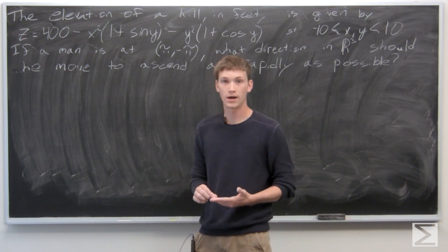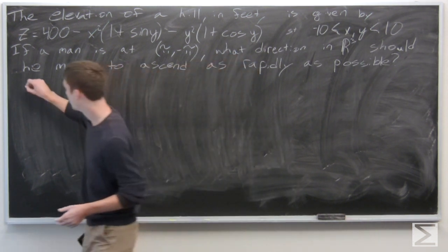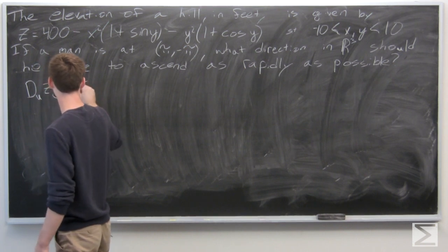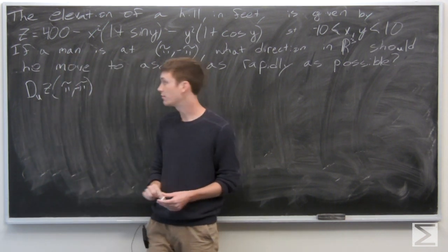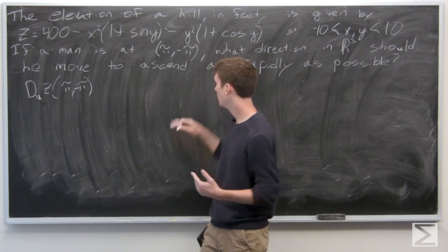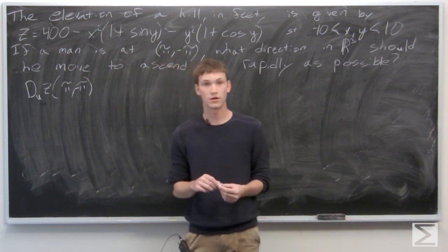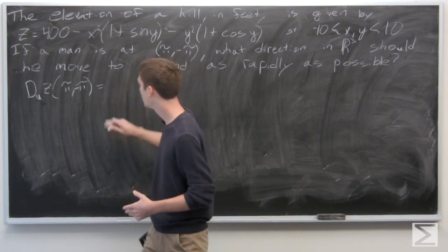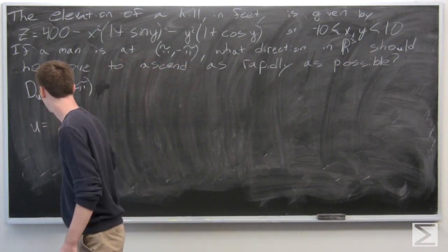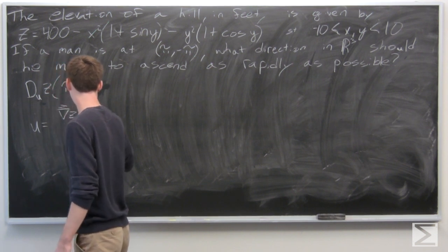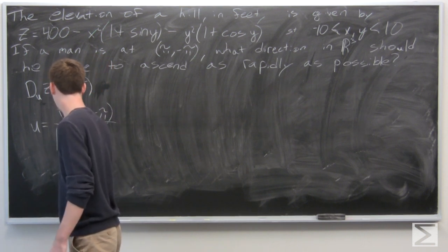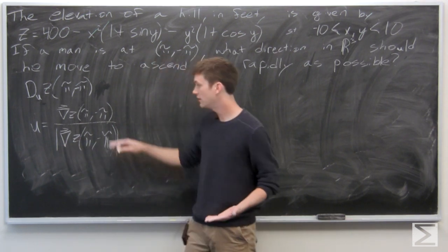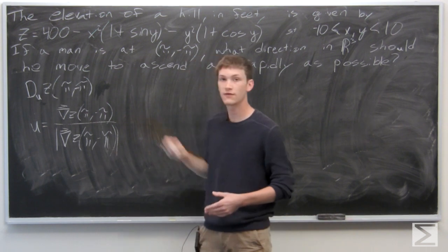First we want to find the xy direction in which he will ascend as rapidly as possible. We know that is just the directional derivative of z at the point (π, -π) in the direction u, and we want to maximize it. That direction is the gradient vector of z at (π, -π). So we want to find u such that it is the normalized gradient vector of z at (π, -π), which we can easily calculate.